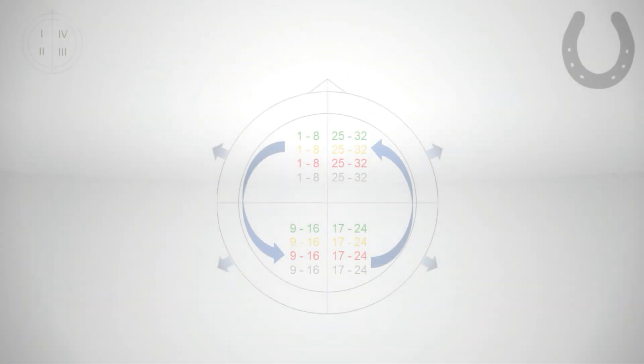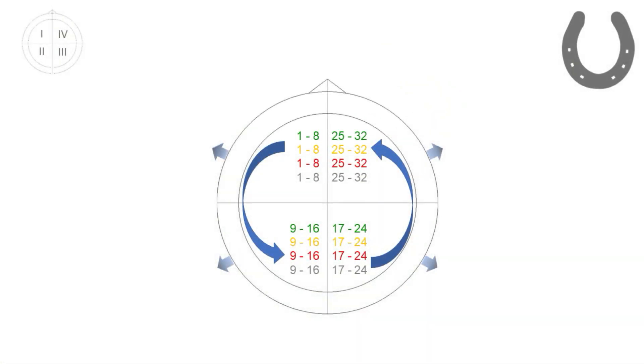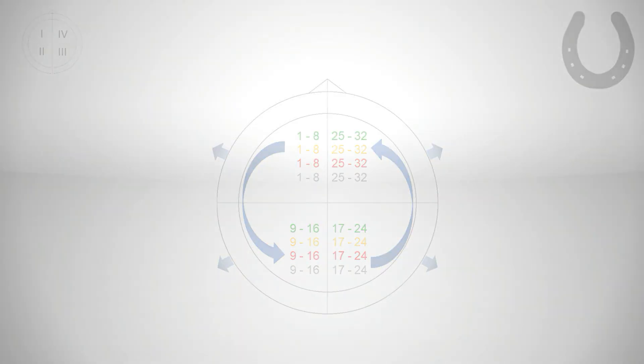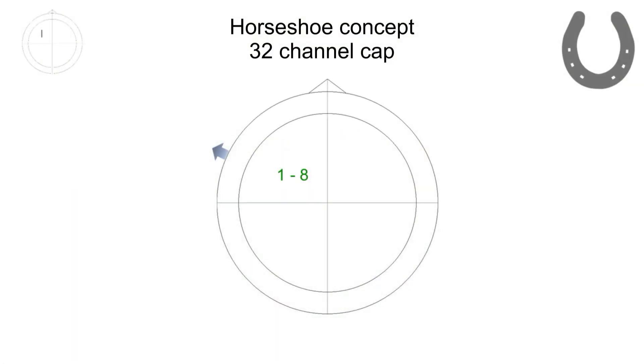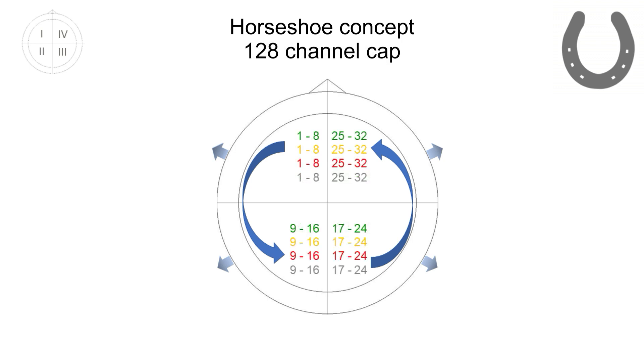Each set of 32 colored holders on a standard ActiCap snap cap is arranged in a horseshoe shape. Here, consecutive sets of 8 electrode holders are located within dedicated quadrants of the cap. This allows easy mounting of electrodes in the respective holders and prevents lead wires from coursing over hemispheres or over each other, especially with high-density caps.